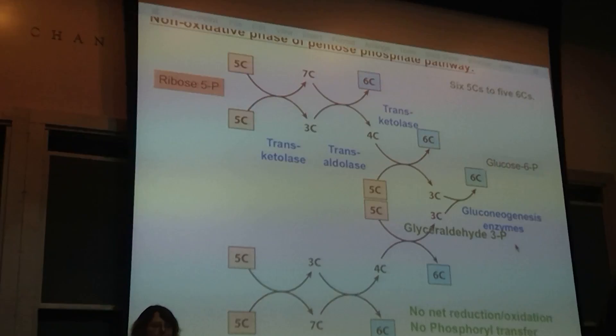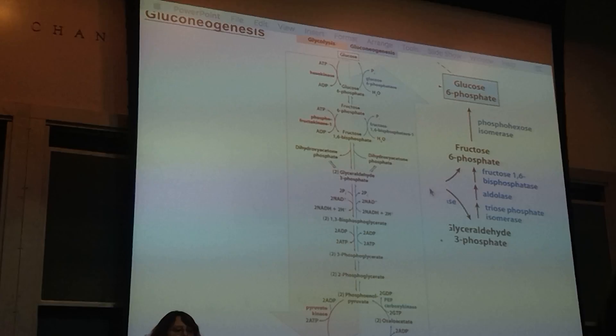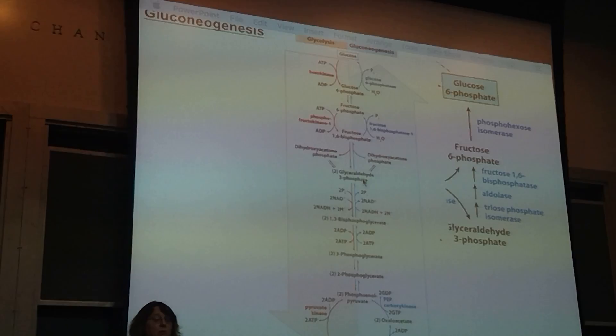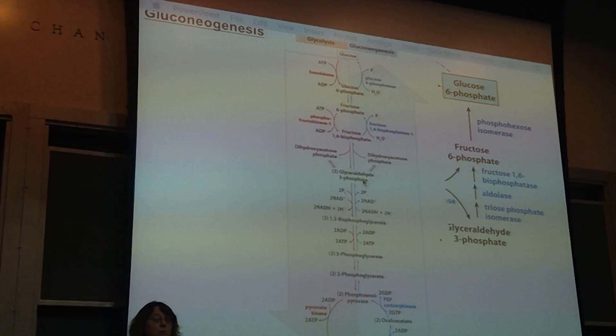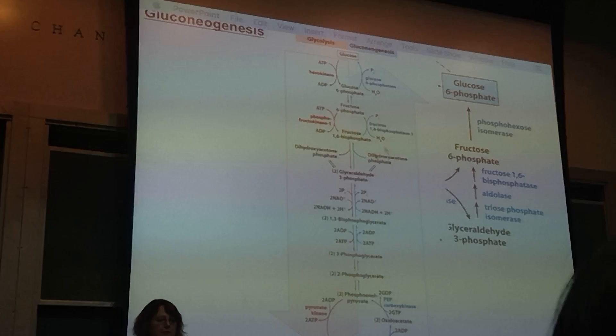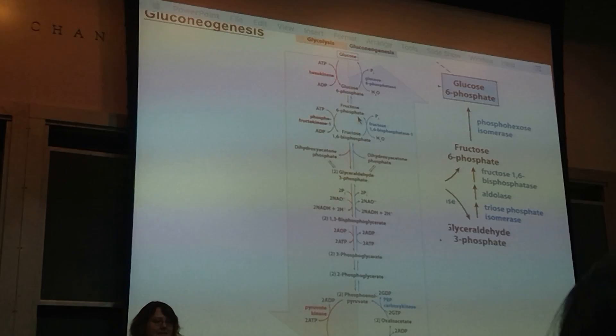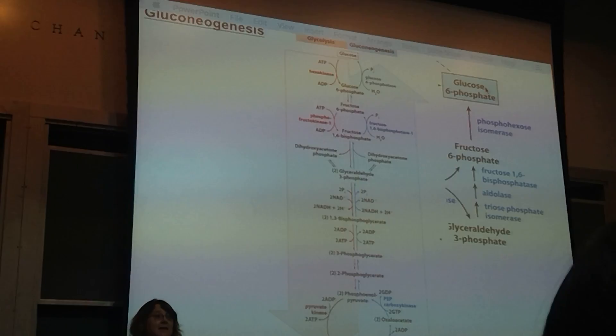Looking at gluconeogenesis for the oxidative pathway regeneration: we have glyceraldehyde-3-phosphate, we do the isomerization to get dihydroxyacetone phosphate. Then the two of those come together with aldolase to make fructose-1,6-bisphosphate. Then we use fructose-1,6-bisphosphatase to get to fructose-6-phosphate — this is the only place where that phosphate comes out. And then from here, we have phosphohexose isomerase to get to glucose-6-phosphate. That's where you get the regeneration.